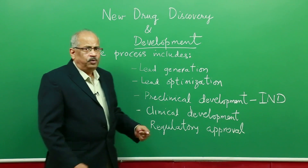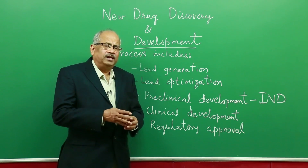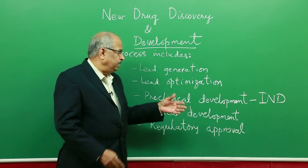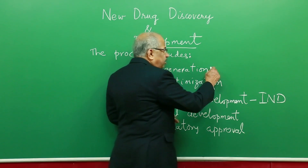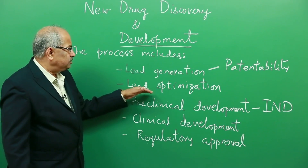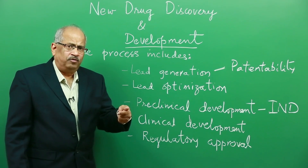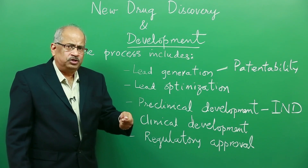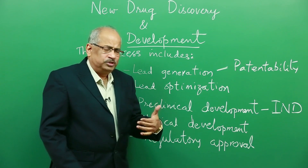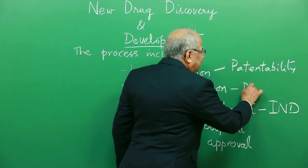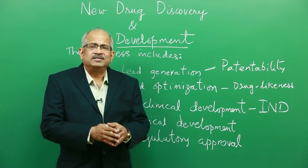All these processes, although they appear simple, take a long time because there are complicated issues involved — such as determining the patentability of the molecule and optimizing it to ensure it has all the characteristics required for a drug to be administered to a human being and produce effects. Here you ensure drug likeness, and during preclinical development you are ensuring that the molecule is developable.